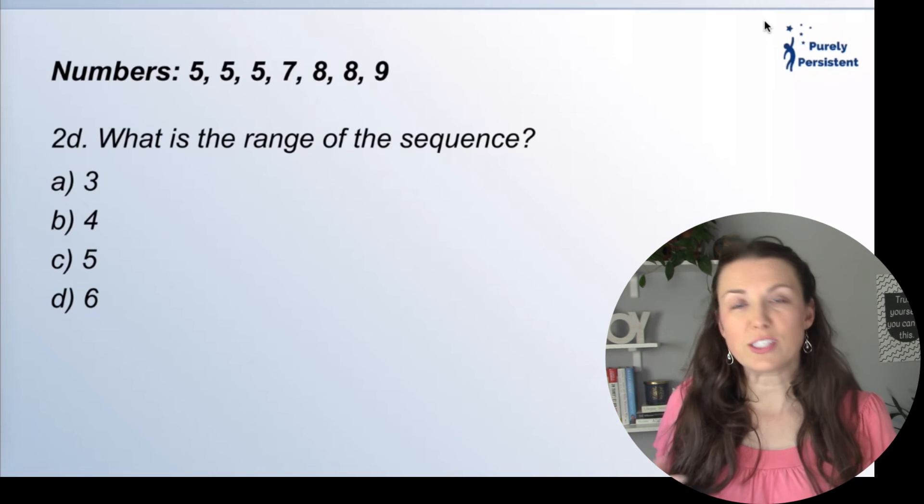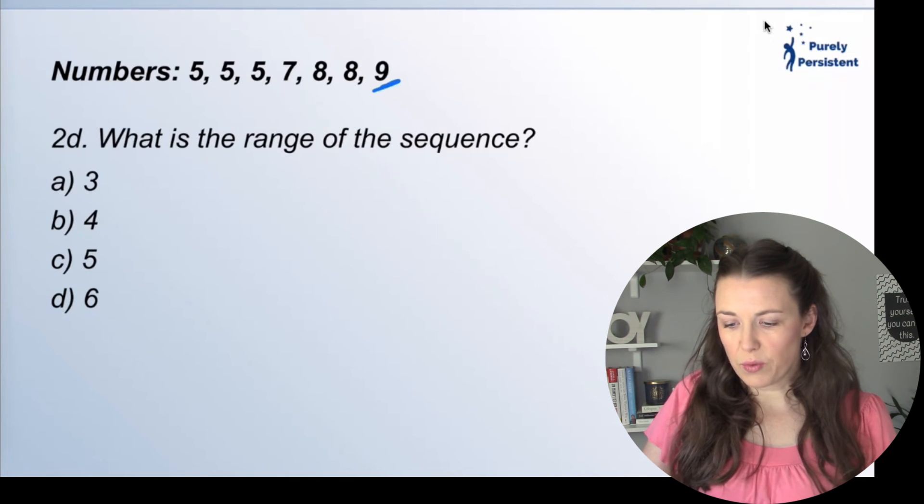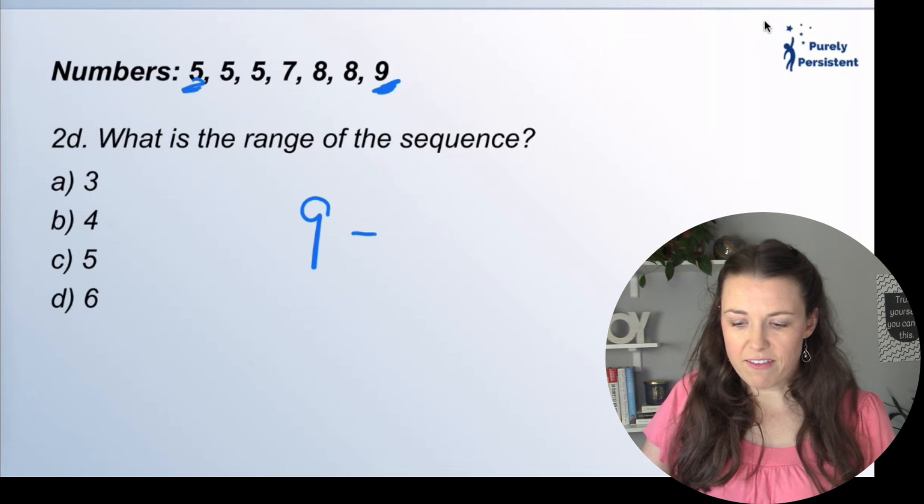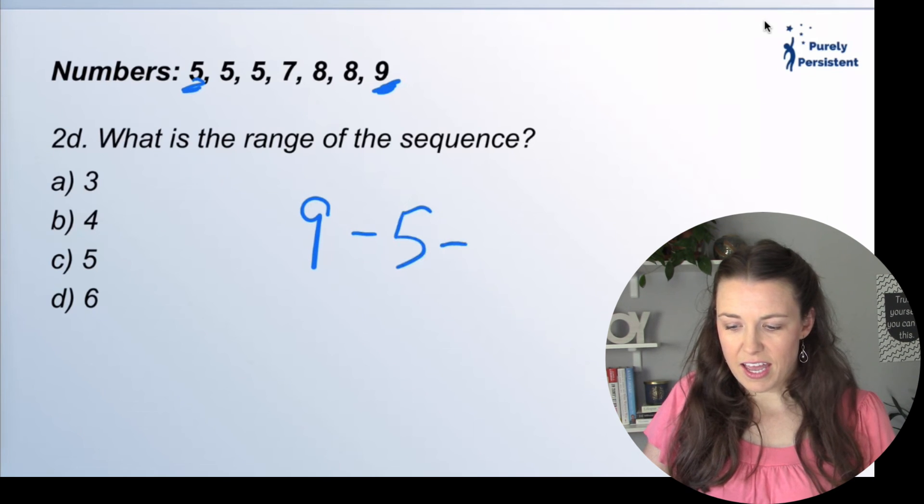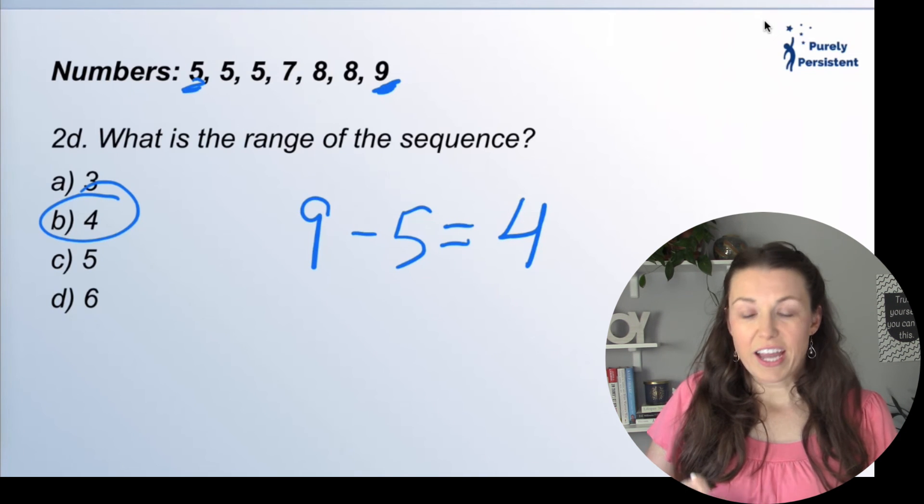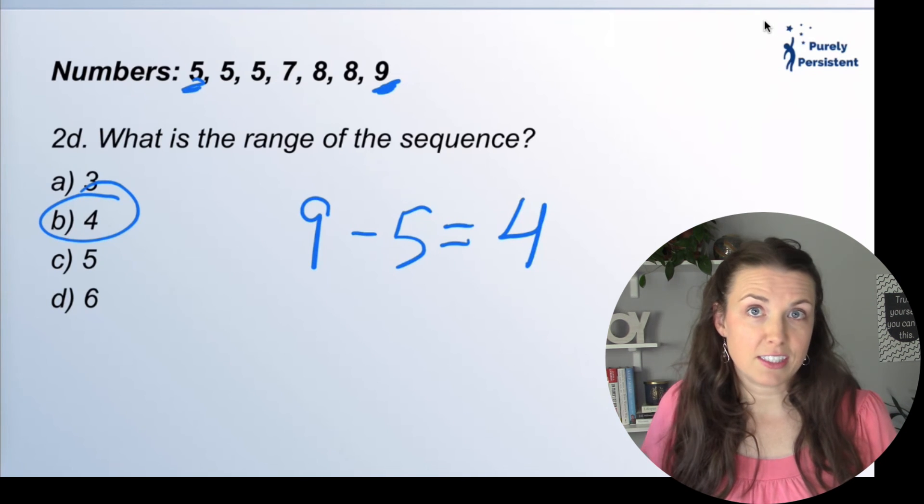What is the range of the sequence? So I take my largest, which is nine, minus my smallest, which is five, and I get four. So the difference between nine and five is four. So four is going to be the range of this sequence.